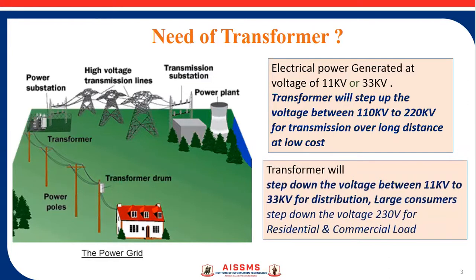Transformer will step down the voltage between 11 KV to 33 KV for distribution for large consumers. It also steps down the voltage up to 440 V for residential and commercial load.